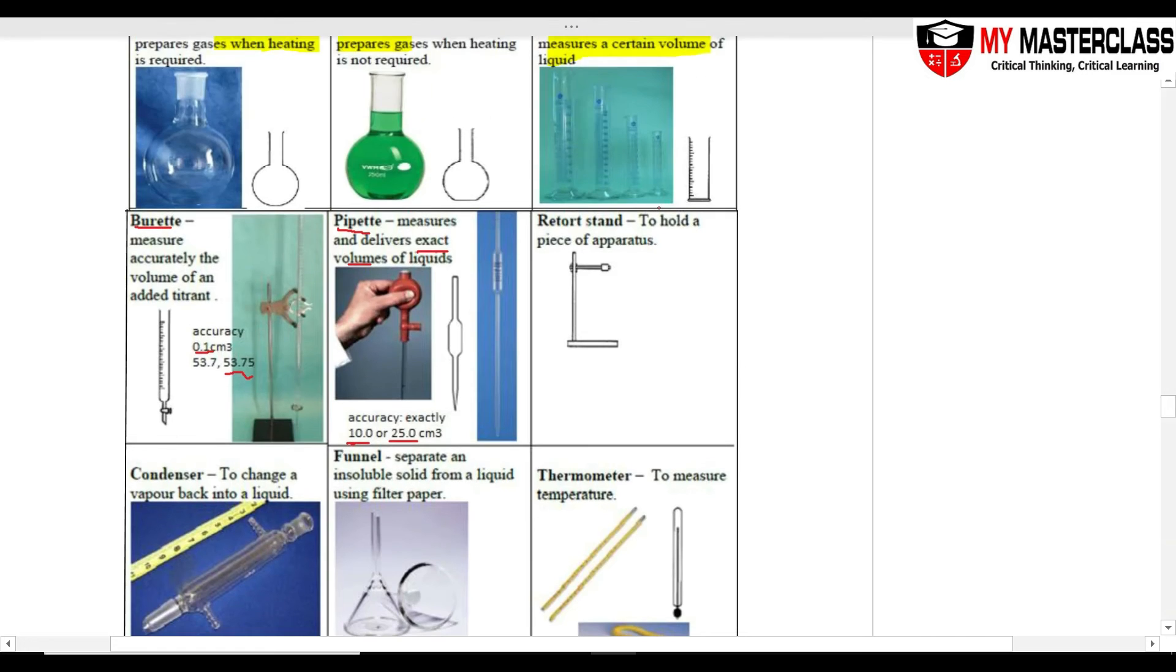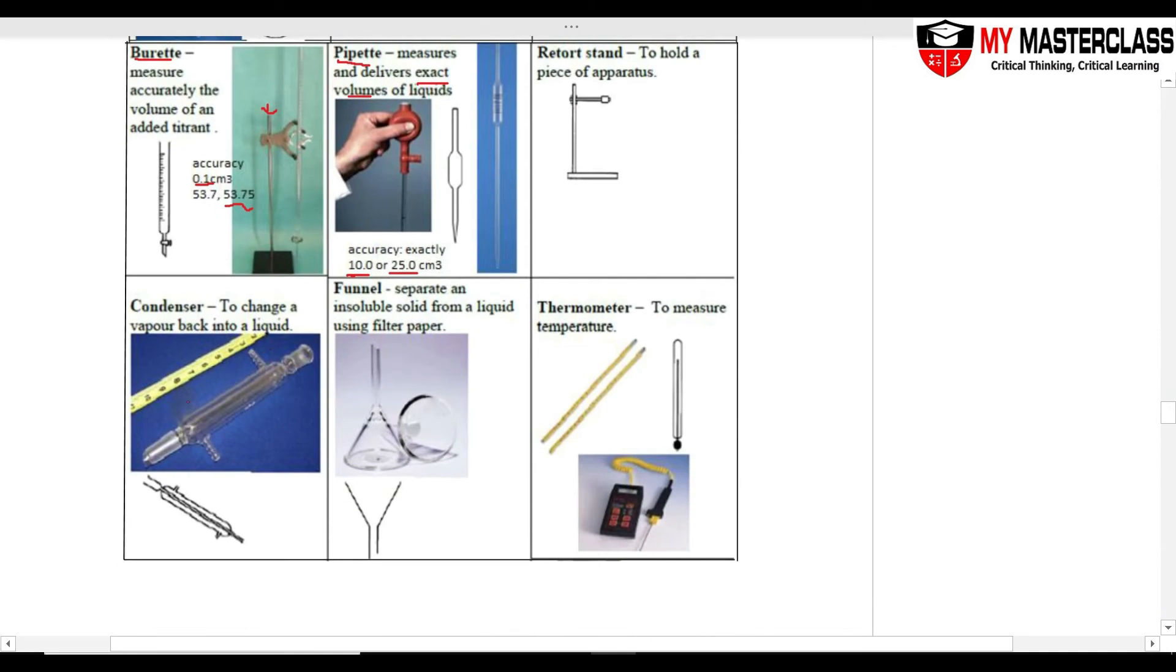A retort stand, this is the long stand that actually clamps the apparatus in. So this whole thing is a retort stand. Condenser, this one in separation technique, simple distillation, you will see it. This one is for vapor, for gases to condense back to liquid.